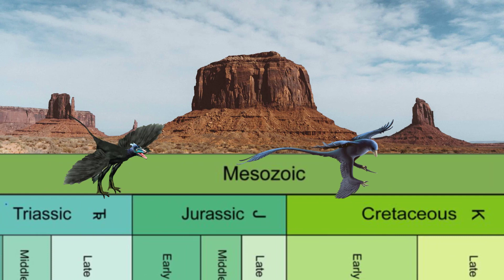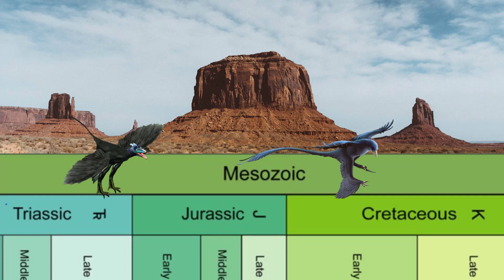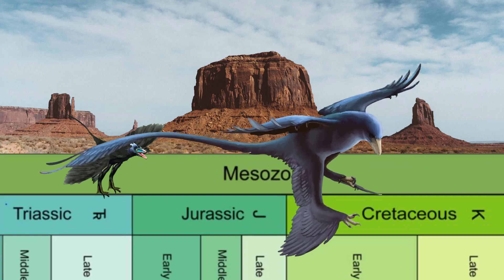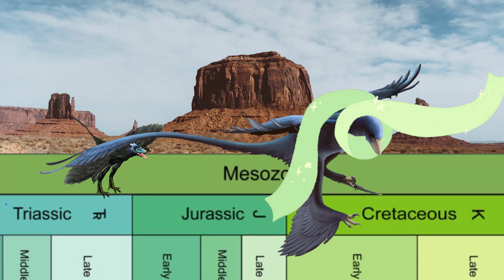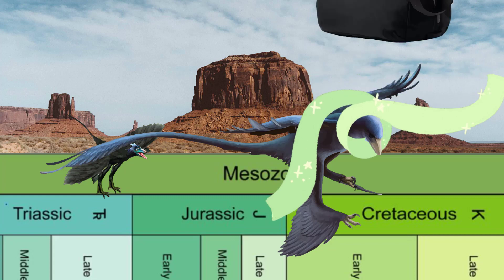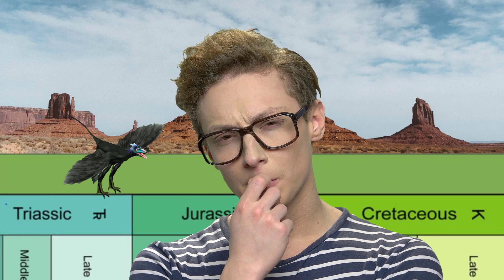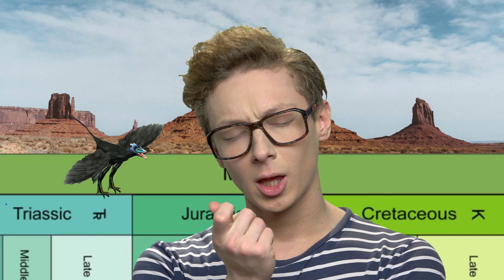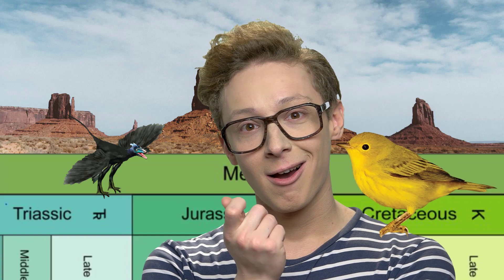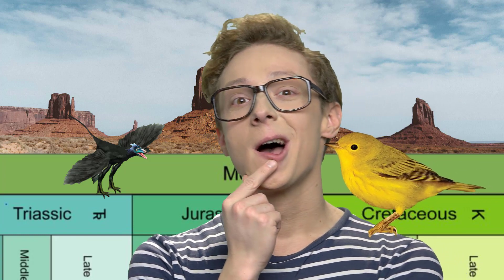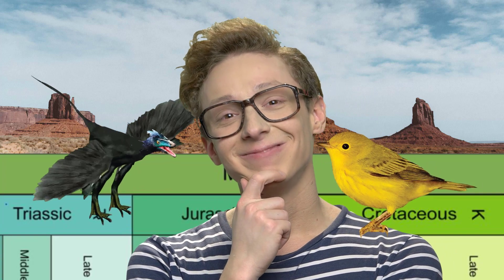Second, when tree-down theorists call Microraptor and other similar feathered animals birds, they are seeking to draw their readers back to an archosaurian reptile capable of powered flight. They are not thinking forward in terms of modern birds. Yet when some creationists call Microraptor and other similar feathered animals birds, they inadvertently cloak the word in modern garb, without unpacking all of the hidden baggage.